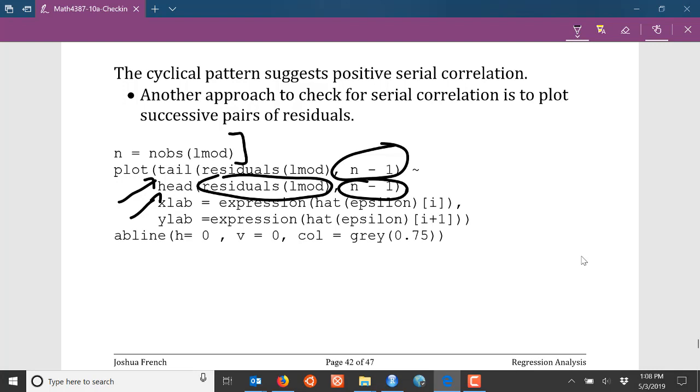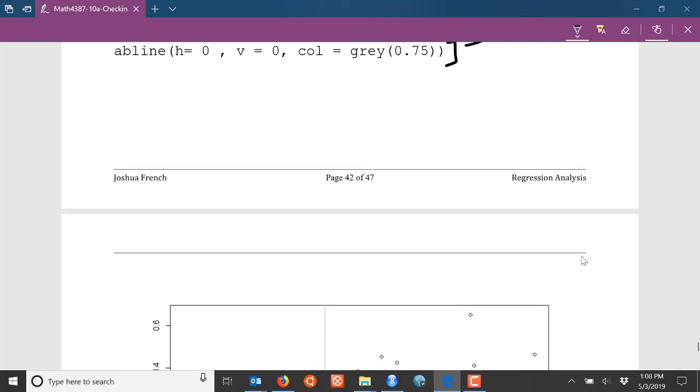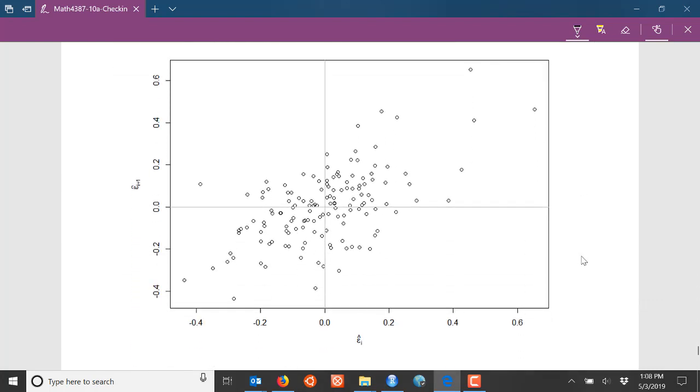When you think about comparing those to one another, that is in fact going to give me a plot of epsilon hat i plus one versus epsilon hat i. It's going to give us exactly what we want if we do it like this. I do some fancy labeling of the x and y axes and then I add a reference line, a vertical line at x equal to zero and a horizontal line at y equal to zero.